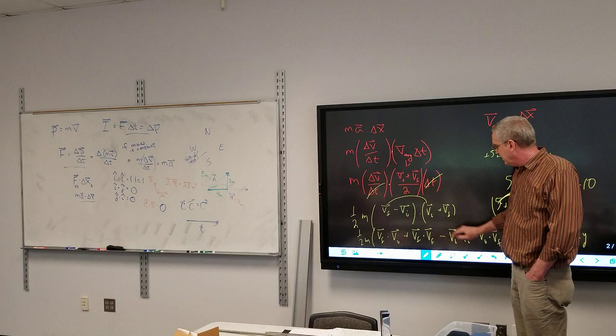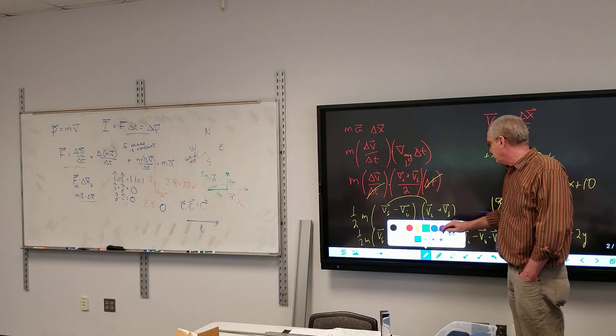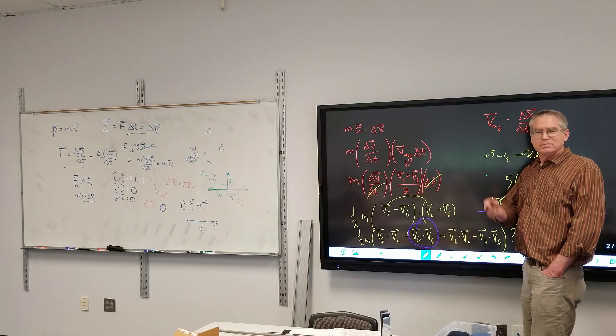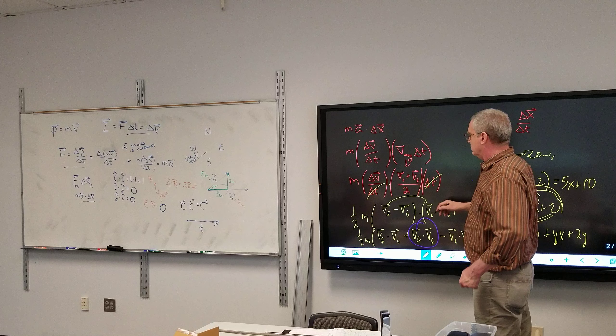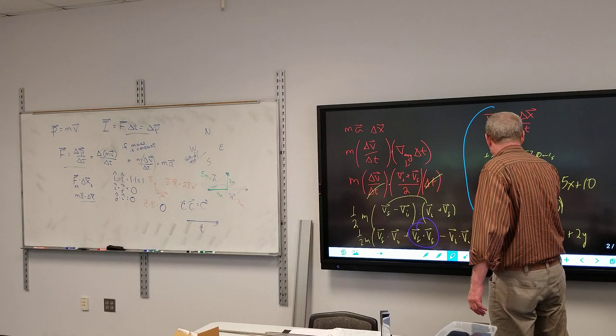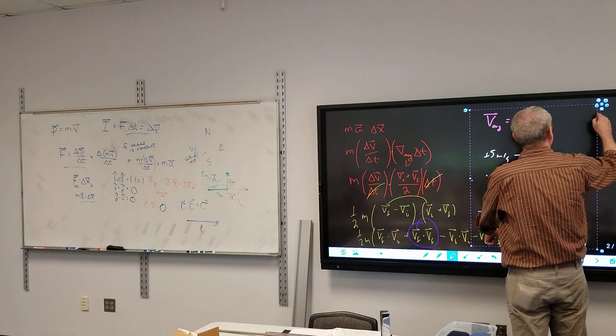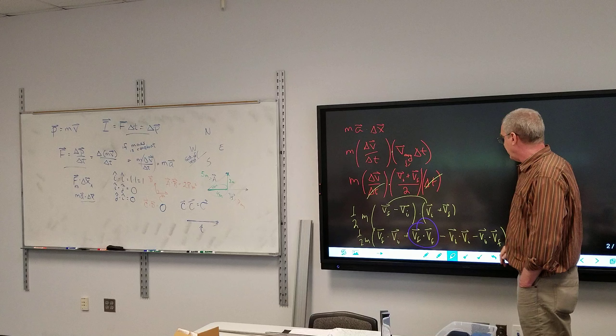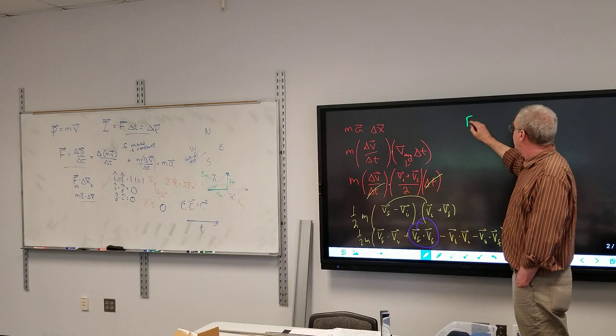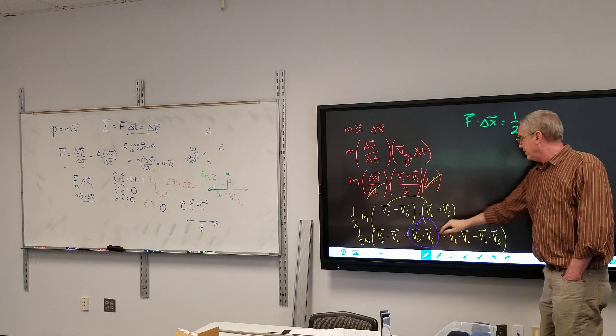All right, first let's take care of the simple, potentially simple one. I have a vector dot product with itself. What is that going to be? So I've got my F dot, force times displacement, and I got one half mass times I got a VF squared.